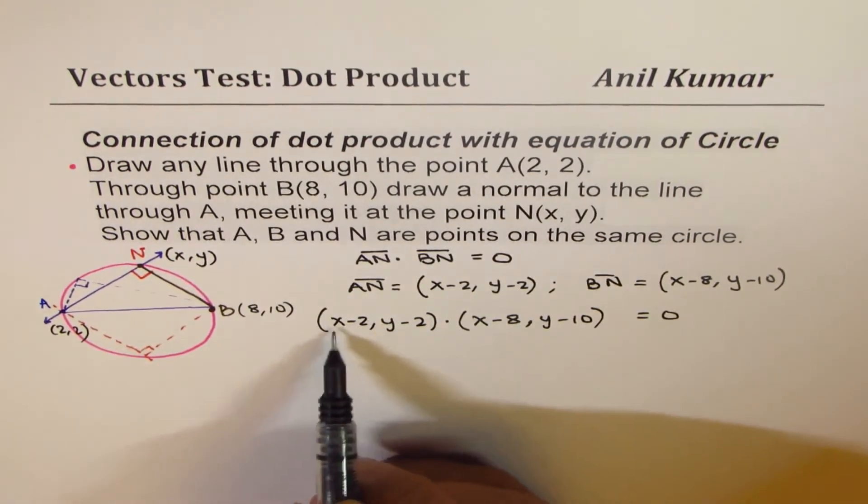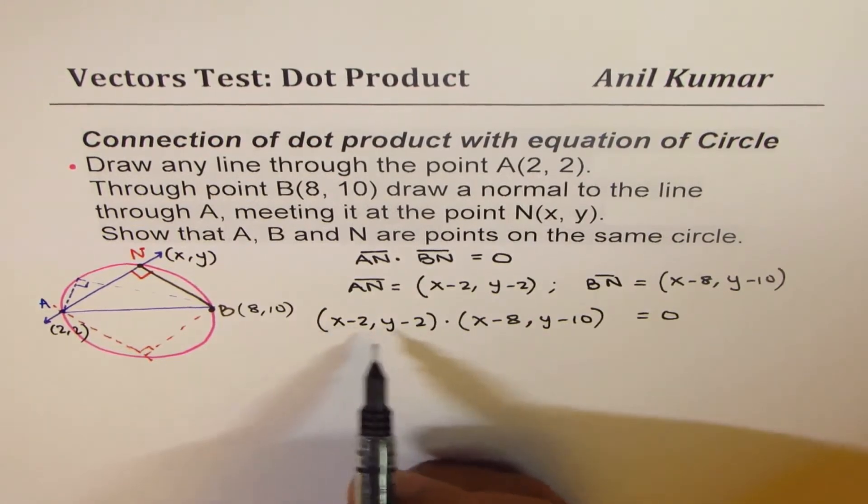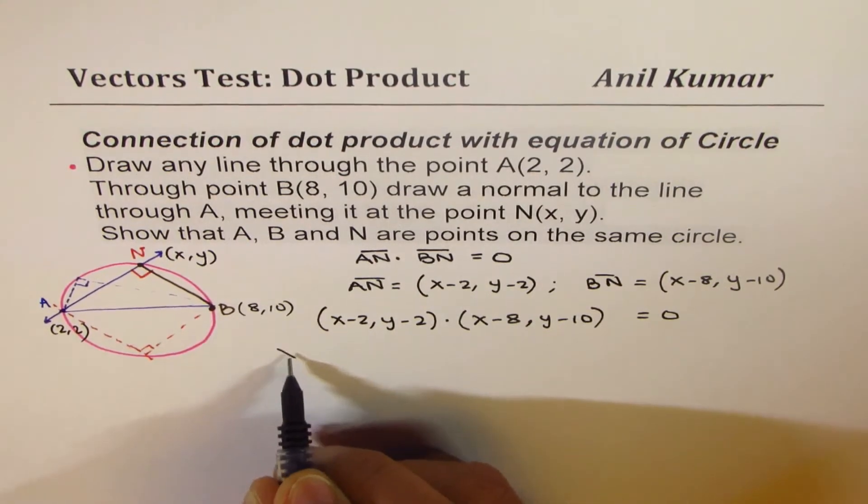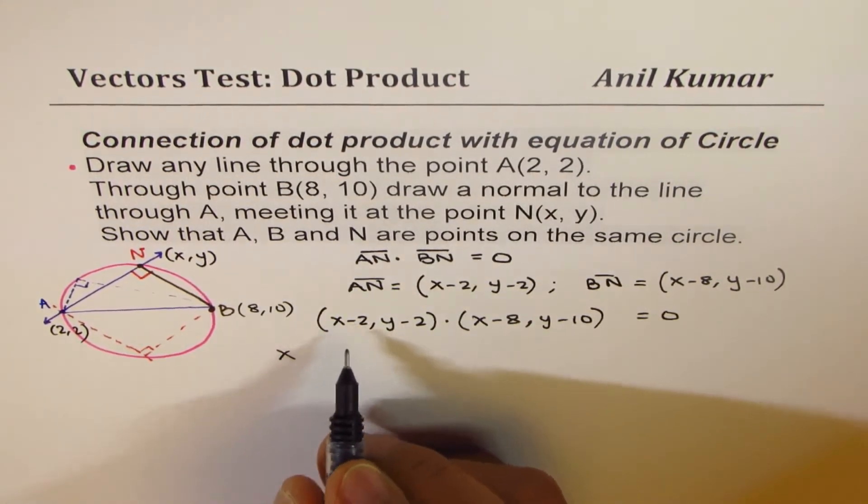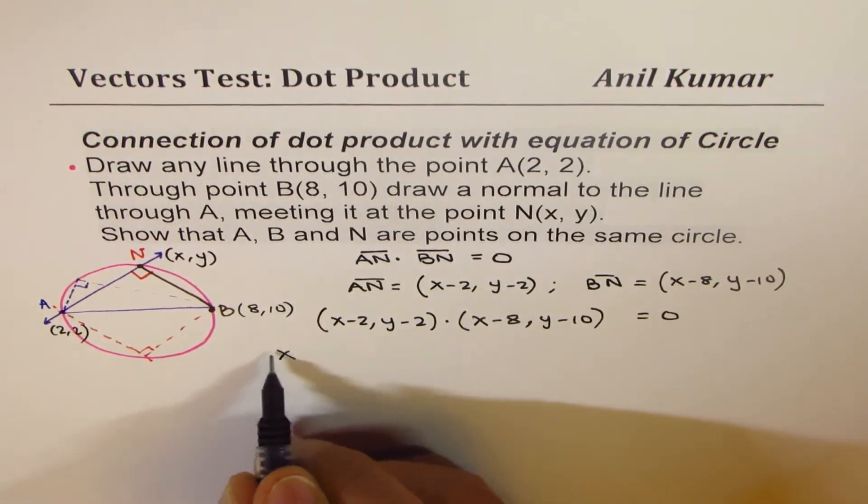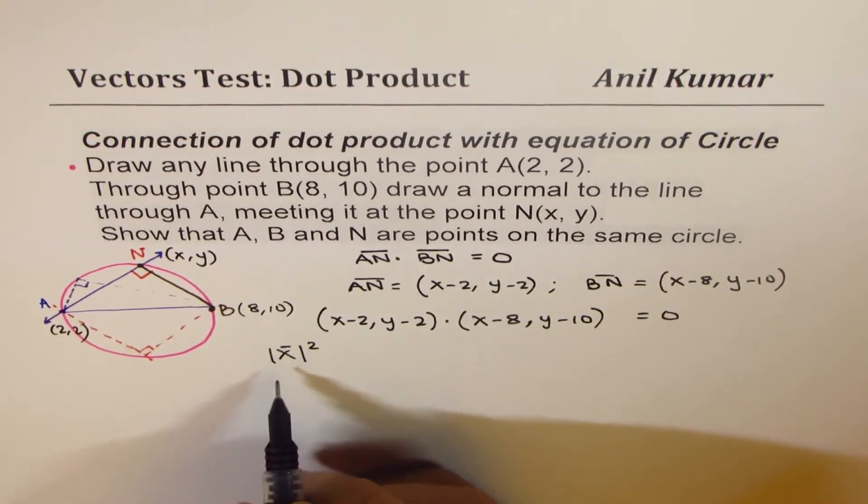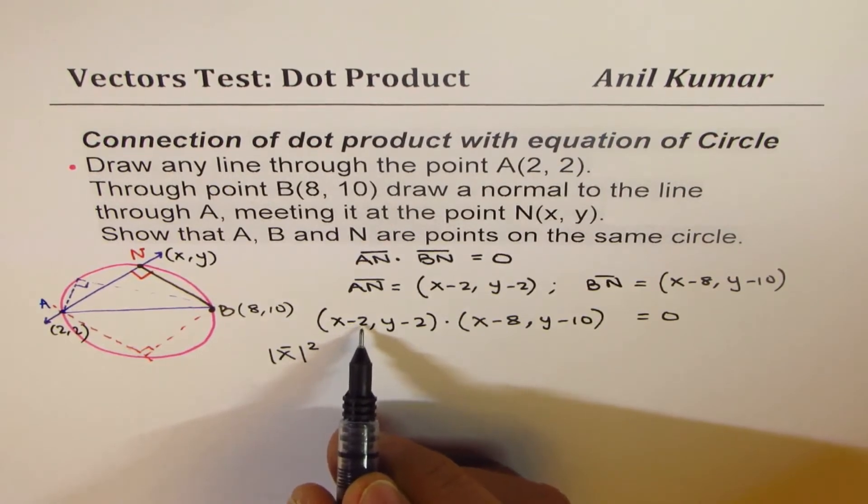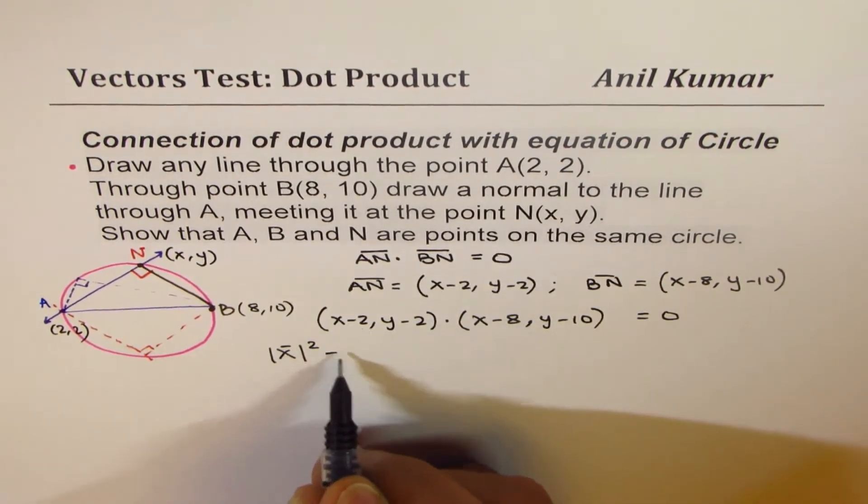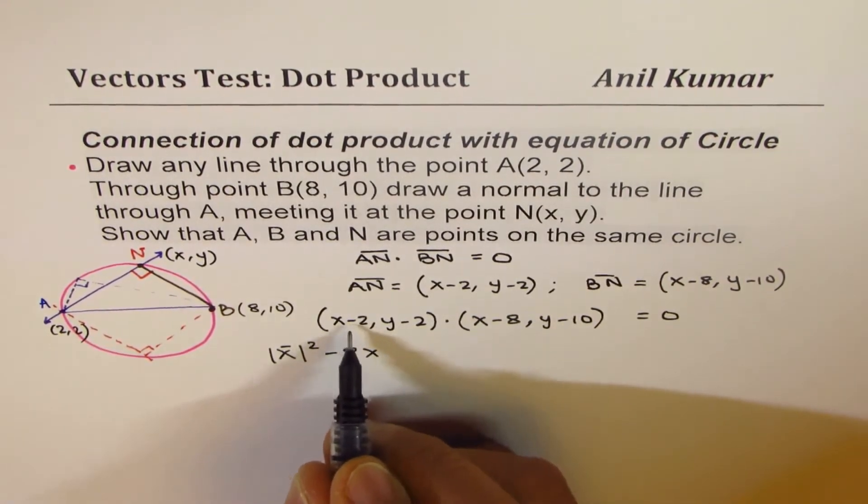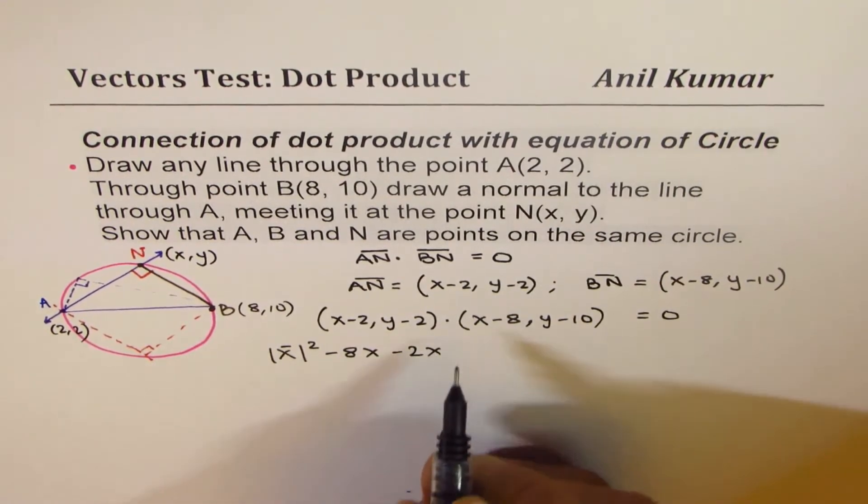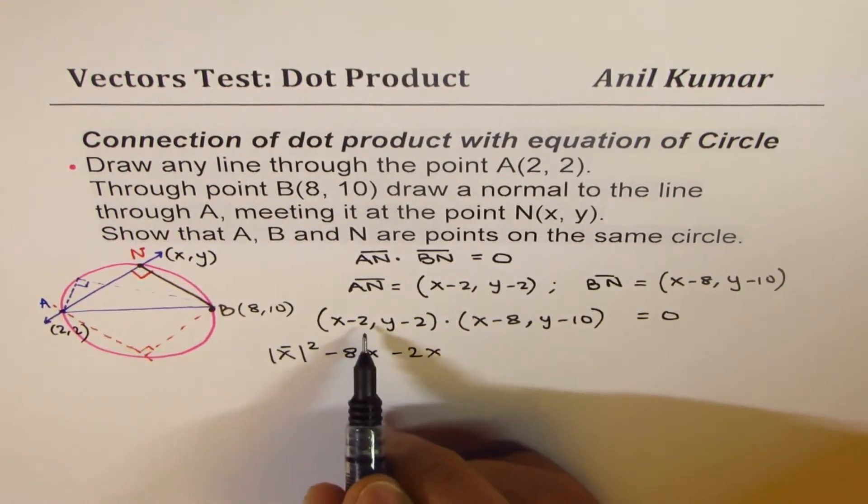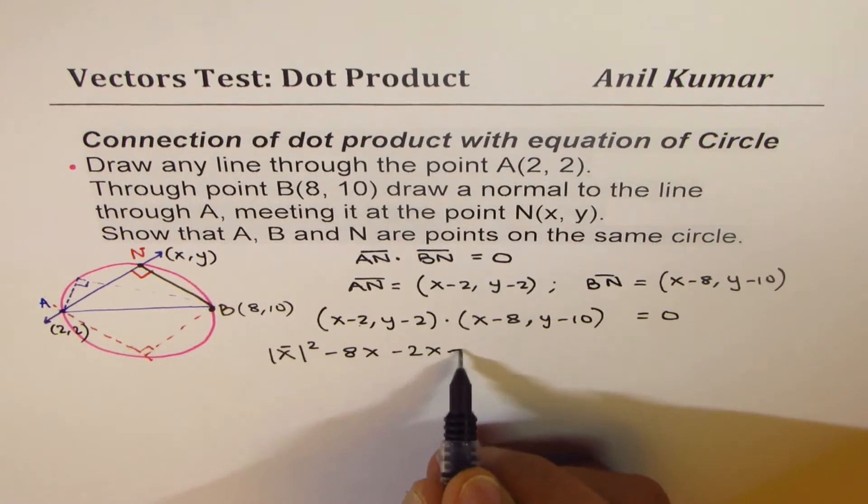So let's find the dot product. X components get multiplied. So we get X times X as X squared. So magnitude squared, right? X squared. And this is 8 times X, let me write minus 8X. And with minus 2, we get minus 2X. And with minus 2 and 8, we get plus 16.